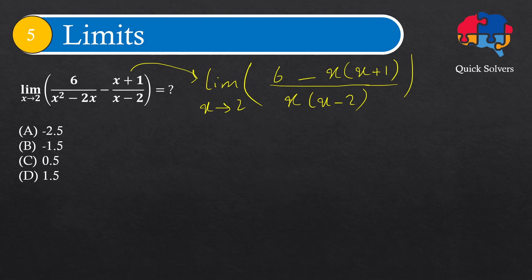All right. Now I can expand this expression, this x, into this term. And if I do so, then I'll get 6 minus x squared minus x over x times x minus 2, where x goes to 2.